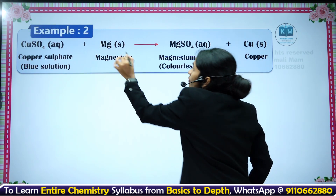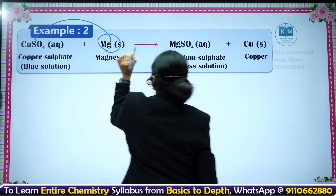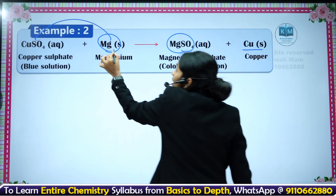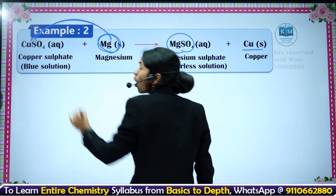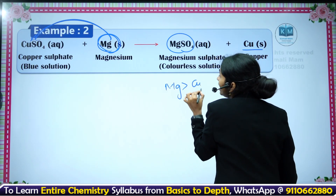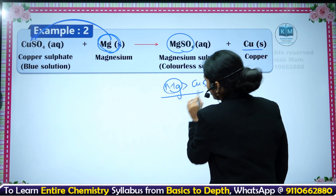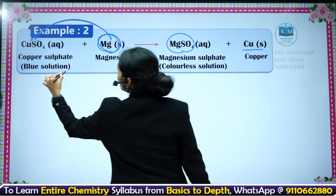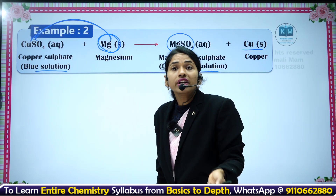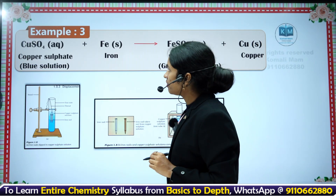Next example: if you put a magnesium strip in copper sulphate, then we get magnesium sulphate and copper metal are formed. Magnesium is more reactive than copper, that is why it is displacing copper from copper sulphate. The blue color of the solution slowly fades into a colorless solution. This is an example of a displacement reaction.